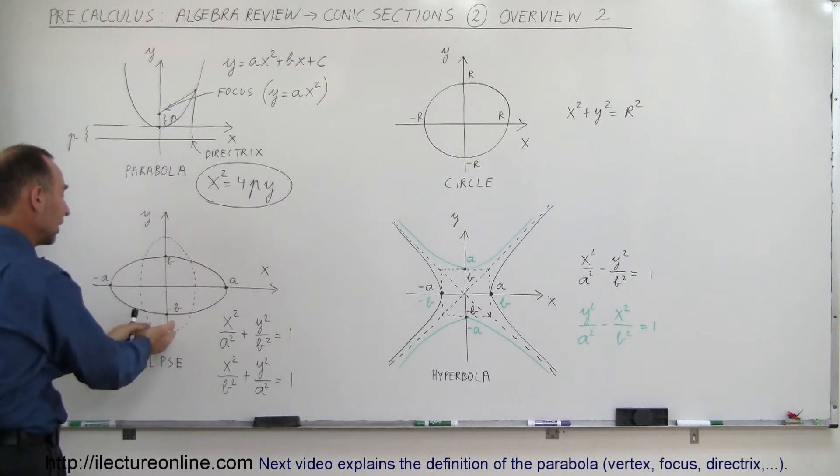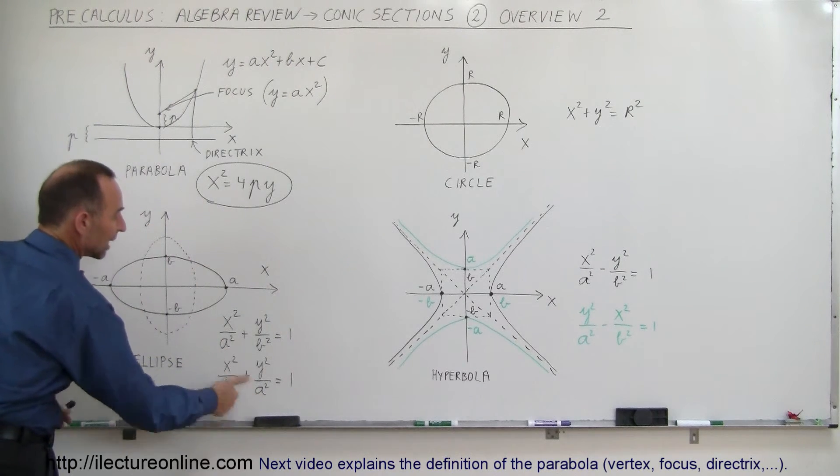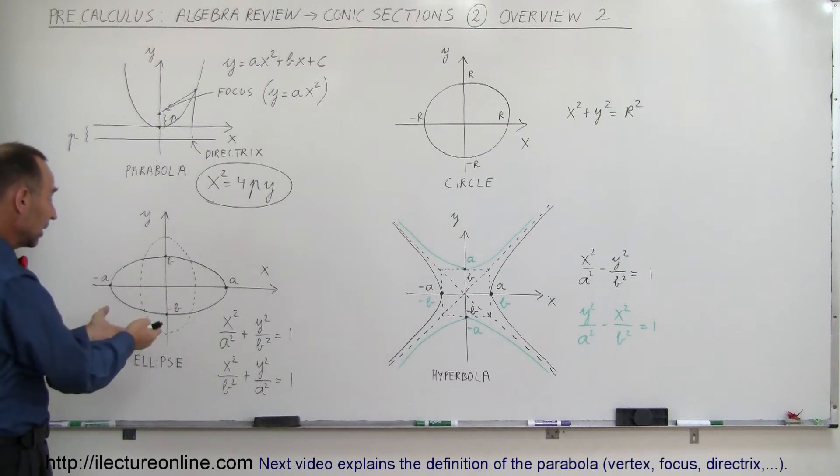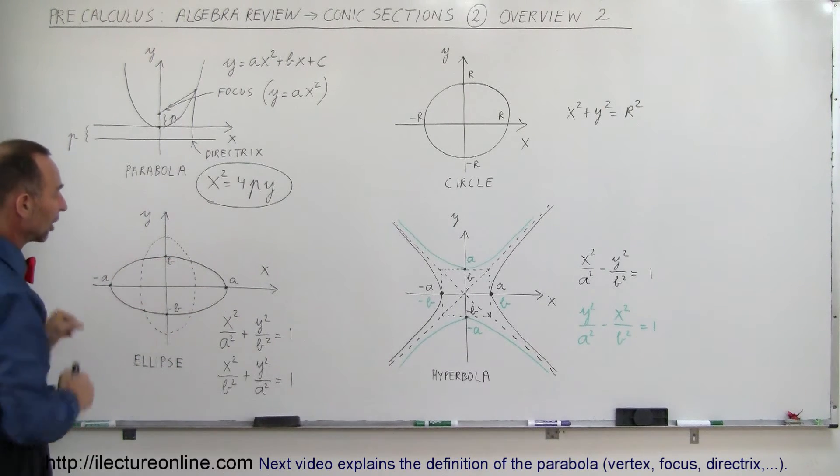Or if you take the ellipse and center it like this, we simply exchange the a and the b, and then we have a new equation for ellipse, where the ellipse is elongated in the vertical direction instead of the horizontal direction.